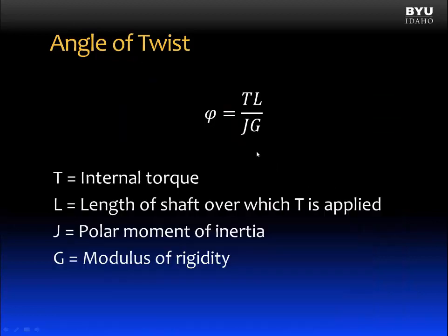The equation for an angle of twist is phi equals TL over JG, where T is the internal torque, L is the length of the shaft over which T is applied, J is the polar moment of inertia, and G is the modulus of rigidity.